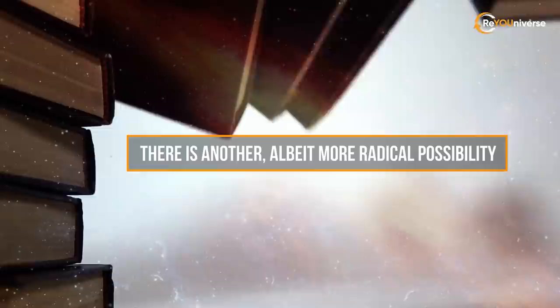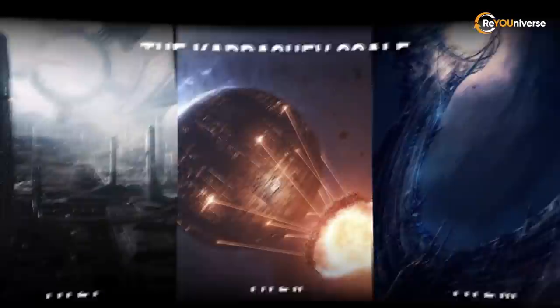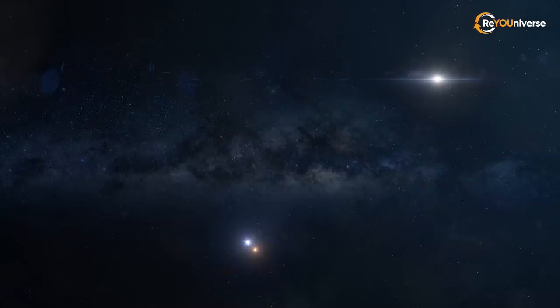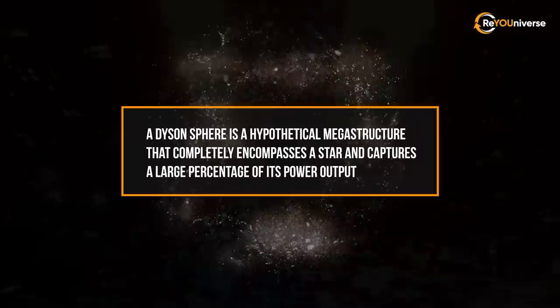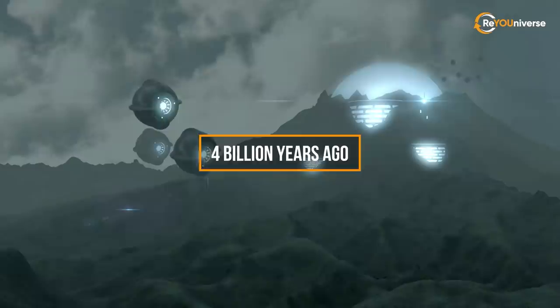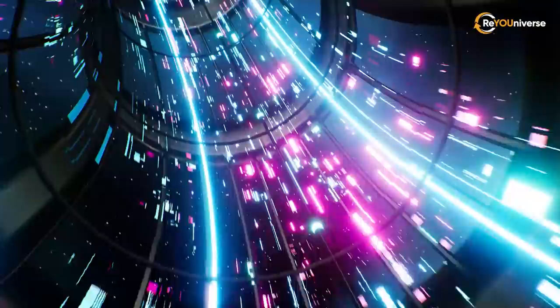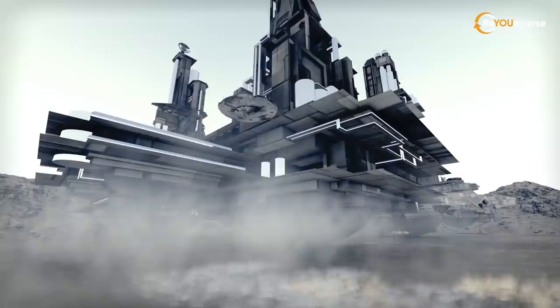There is another, albeit more radical possibility. As the colonization bubble expands outward from its home system, the civilization dims each star and subsequently each galaxy it encounters by blanketing it in a Dyson shell. This might also explain why the void has such a nice, spherical shape. This ancient civilization may have had enough time to perform this astonishing feat of cosmological engineering. Now, this is pure speculation, but it's worth throwing it out there as a possibility, given the strangeness of this phenomenon.